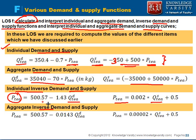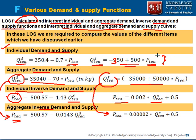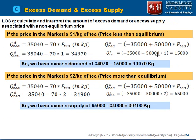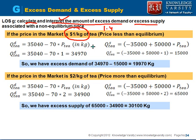For aggregate inverse demand and supply, you do not simply multiply — instead you express each equation in terms of price. These are the functions used in examinations where you may be asked to do computation. They also ask you to compute and interpret the amount of excess demand or excess supply. For example, if the market price of tea is $1 per kg, which is below the equilibrium of $1.4, what is the excess demand or supply?